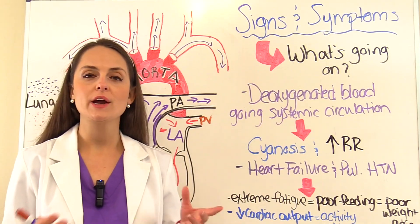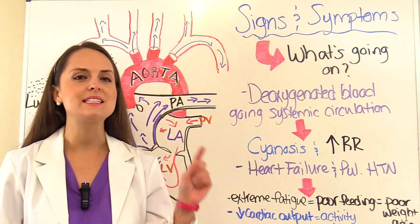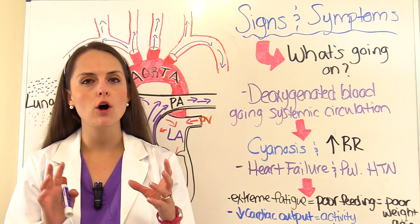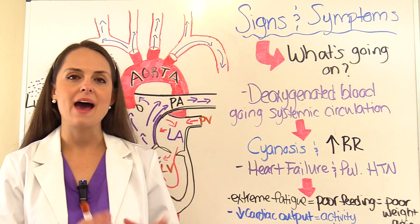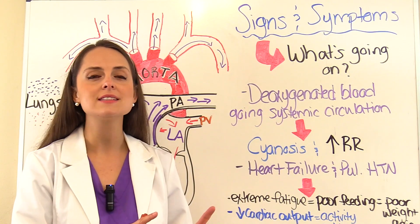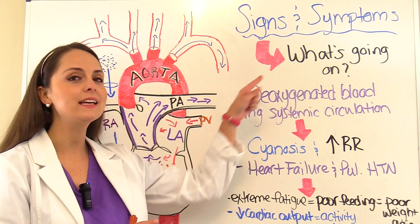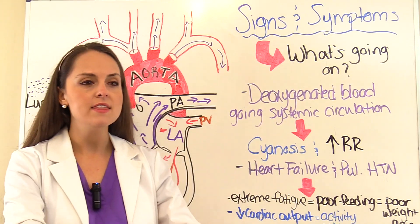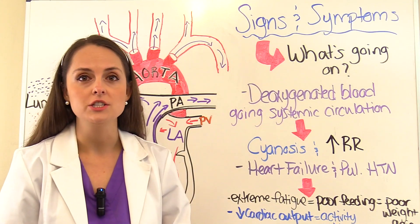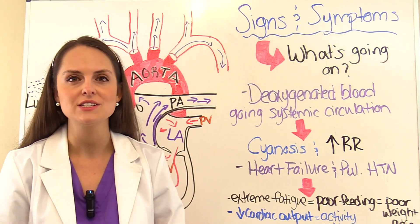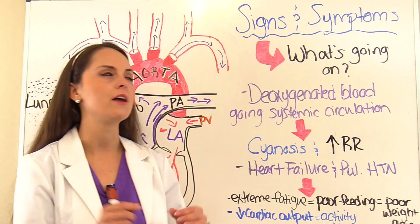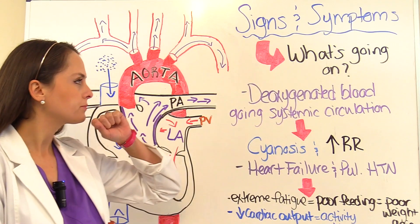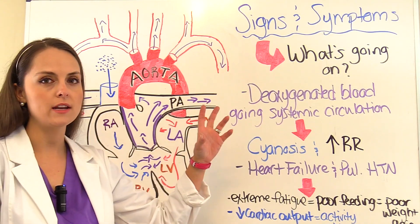Now let's talk about the signs and symptoms. When you're on an exam, think about the pathophysiology — if you can remember those key concepts, the signs and symptoms fall into place naturally, and you can derive nursing interventions from them. So what is going on? First, we have deoxygenated, mixed blood that is low in oxygen going to the systemic circulation through the aorta.